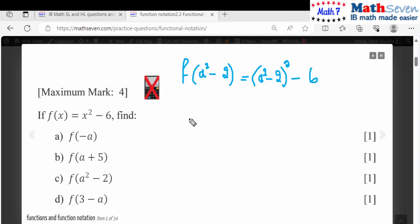If you want to expand this again this is a perfect square. So this will become a to the power of 4 minus 2 times 2 times a squared so 4 a squared, and the 2 squared is plus 4 minus 6 so this will become minus 2.